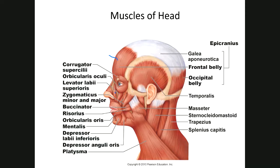The depressor labii inferioris basically pulls the mouth down, while levator labii superioris pulls it up. Your platysma, right in here, also influences facial expression.